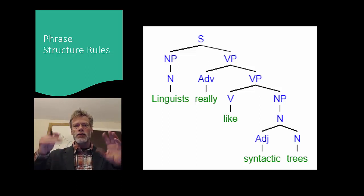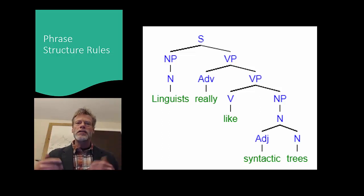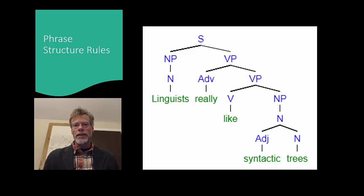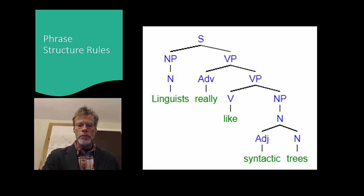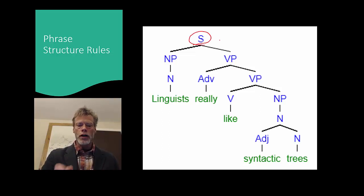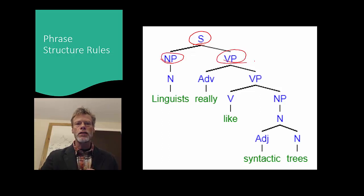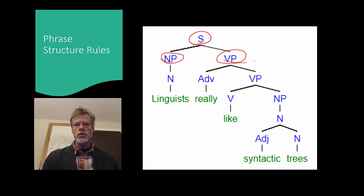Trees themselves, the way we envision these is like a family tree, except it's parthenogenic — it doesn't have any males in it. So we talk about mothers and daughters. If we begin at the very top, we have our sentence, and then it has two daughters: this NP here and this VP here, which means that the NP and the VP are sisters.